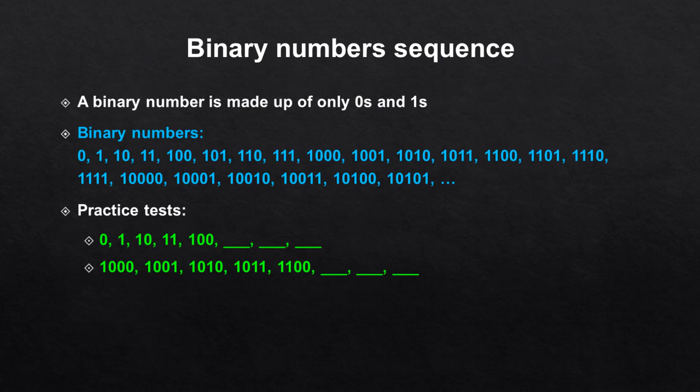A binary numbers sequence is based on the binary number system, where all numbers are made up of only zeros and ones. In the binary number system, there is no two, three, four, five, six, seven, eight, or nine — there are only zeros and ones. This list contains the first binary numbers. And here you can see examples of number series tests with binary numbers.